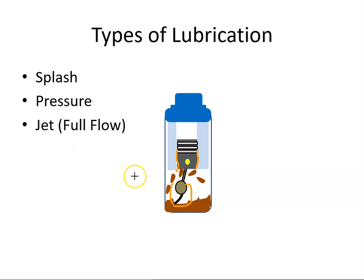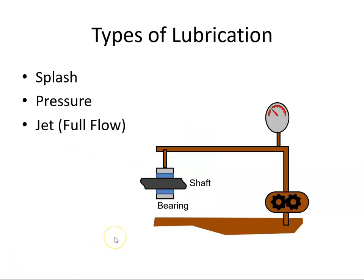So that would be splash type lubrication. The next type is pressure type lubrication. With pressure type lubrication, we take oil from the sump and it goes through an oil pump, so it goes up in pressure, and the oil is then sent along through oil galleries in the engine casing.